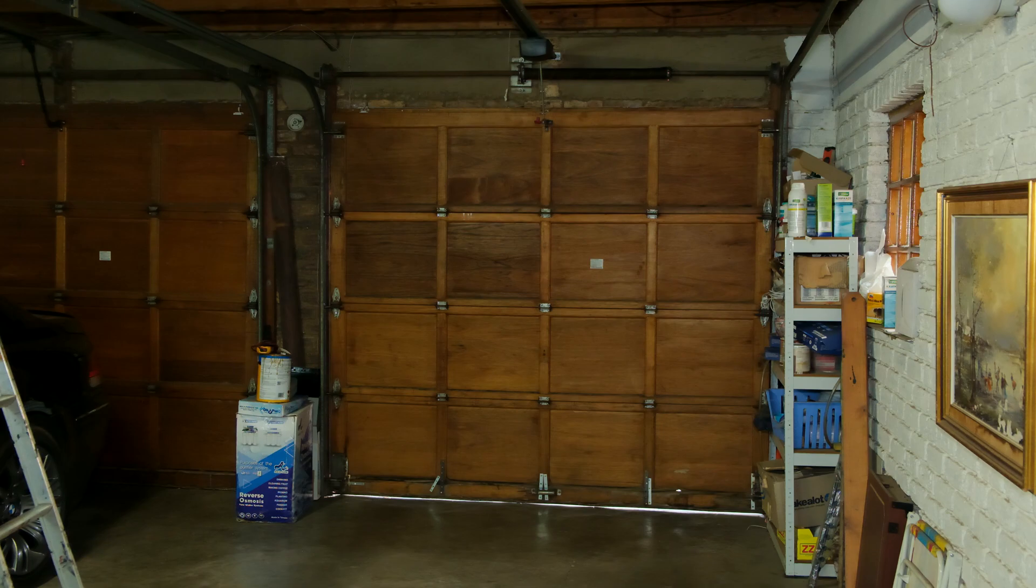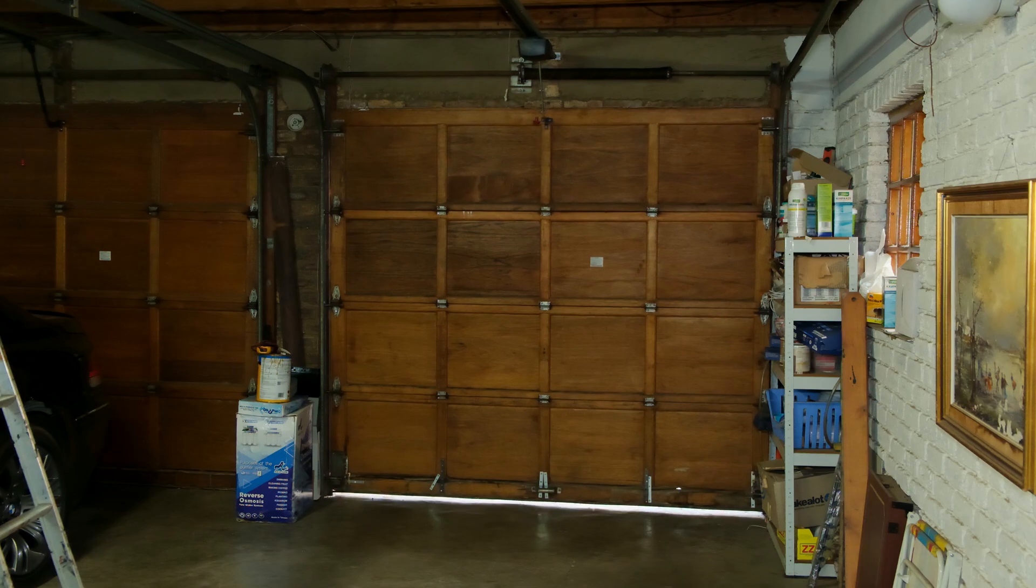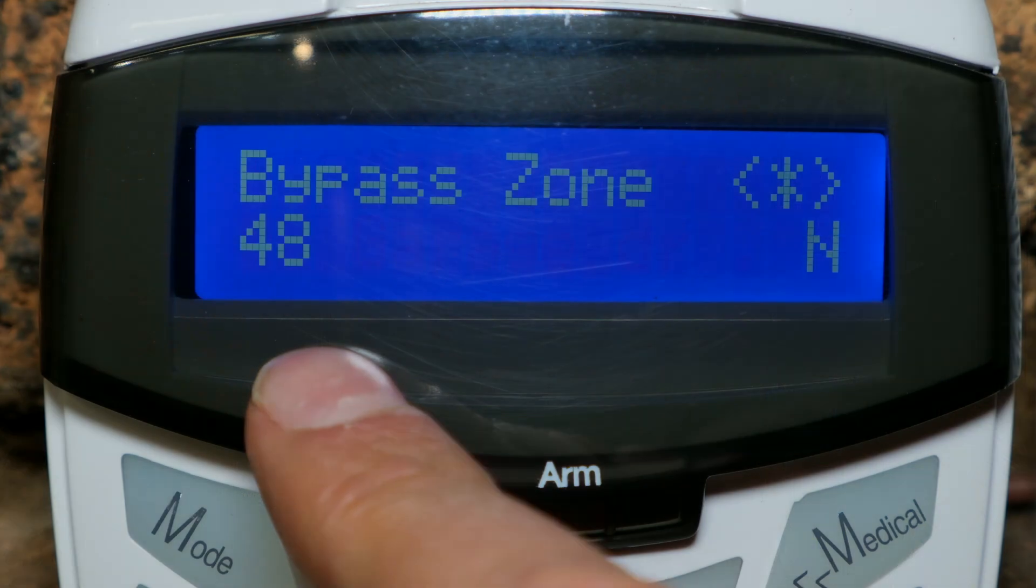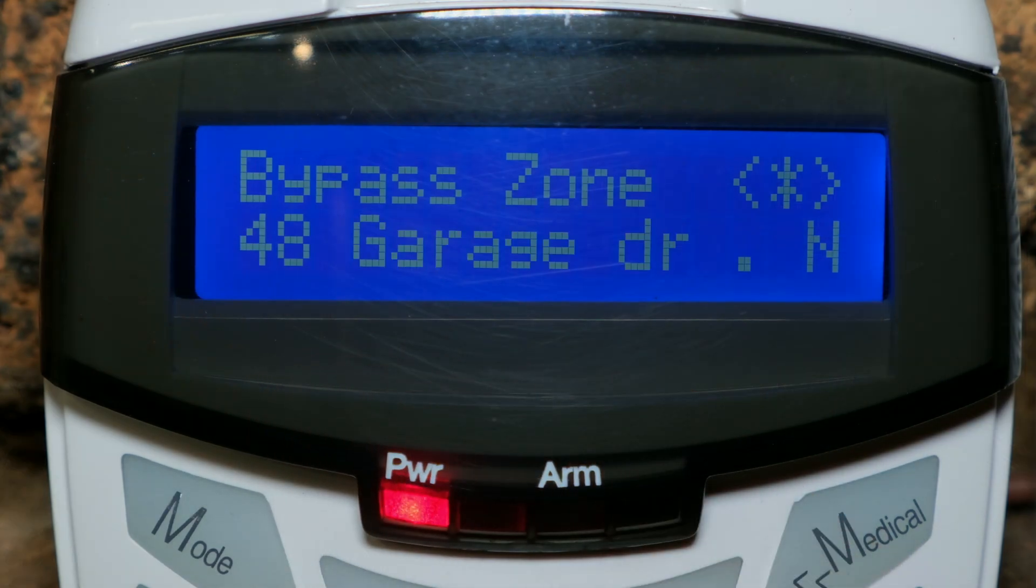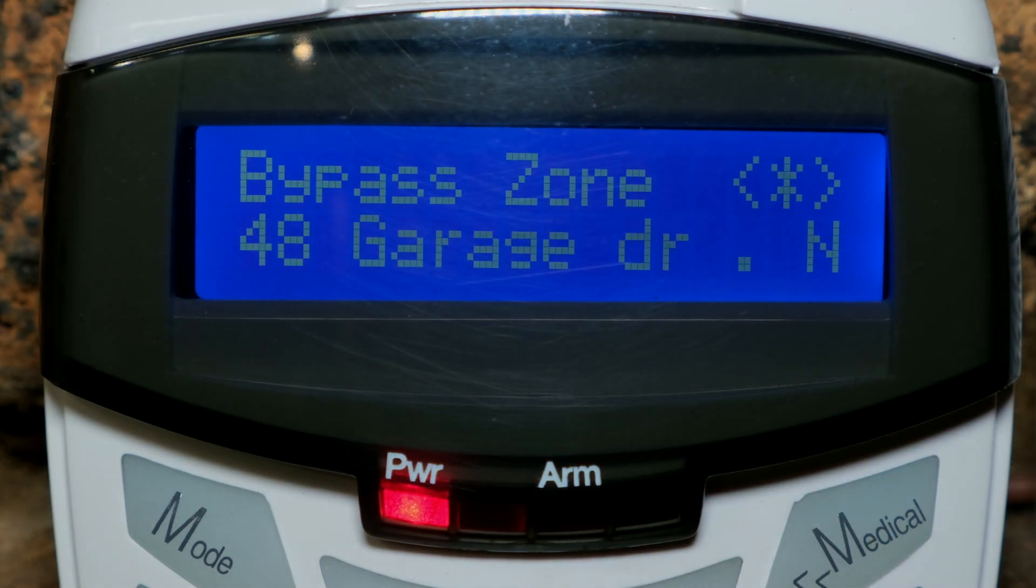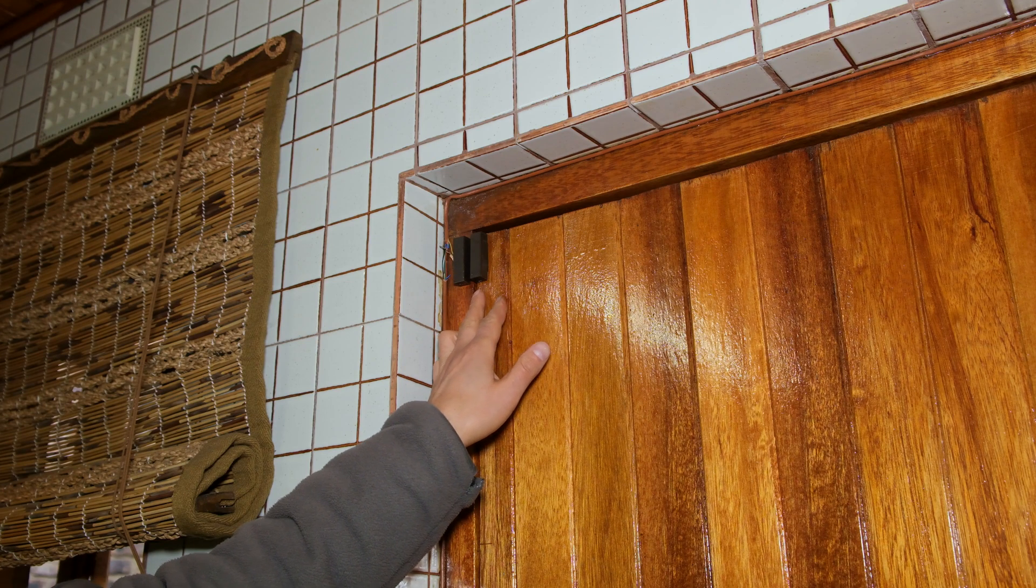Right, so over here my garage door is closed but I'm now going to open it. So what I've done is I've connected the garage door as a zone on my alarm. Just like any door, you can also use a door sensor for your garage door.